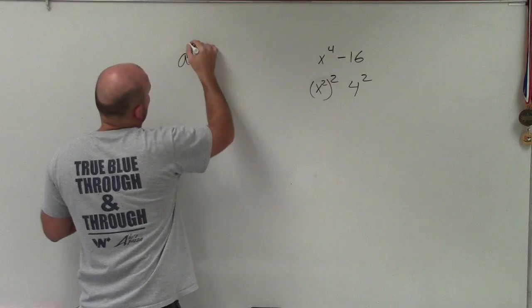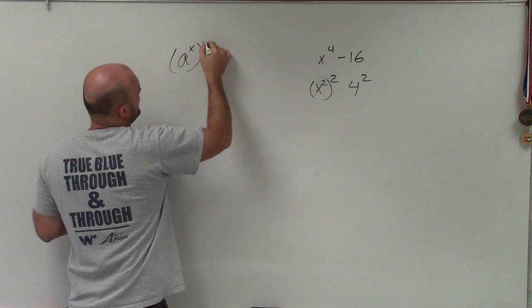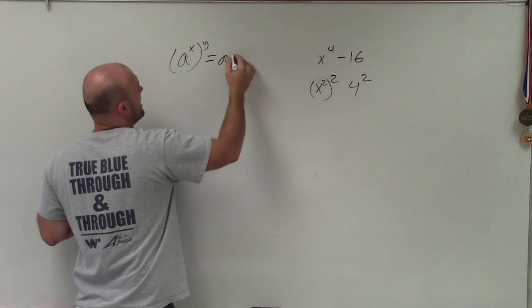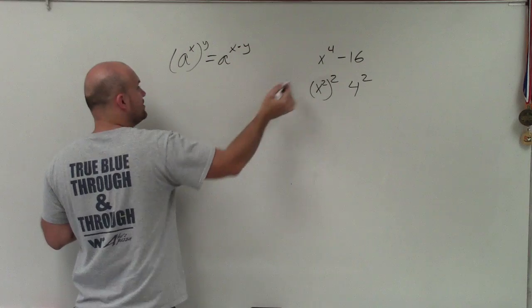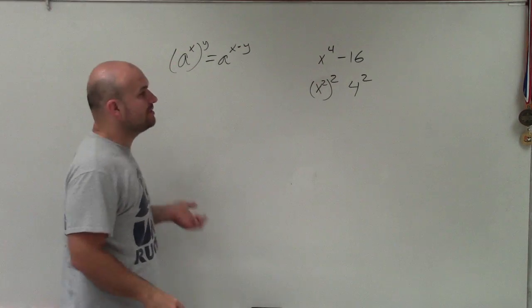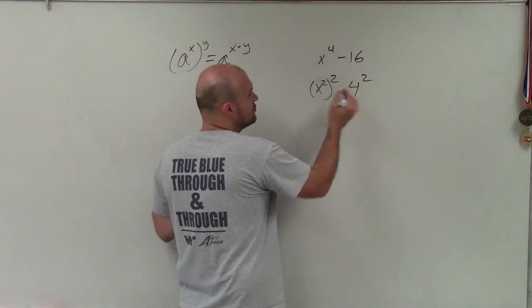Now remember, when you're multiplying exponents, a to the x raised to the y is equal to a to the x times y. So really what we're doing is we're multiplying two times two. But you can see where I'm rewriting these as square terms.